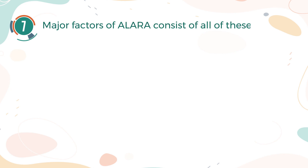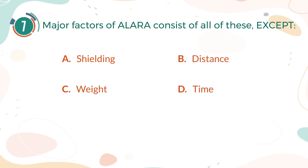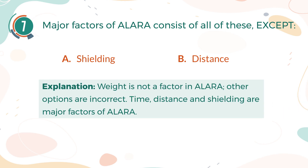Number 7. Major factors of ALARA consist of all of these, except: A. Shielding. B. Distance. C. Weight. D. Time. The correct answer is C, Weight. Explanation: Weight is not a factor in ALARA. Time, distance, and shielding are the major factors of ALARA.